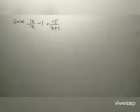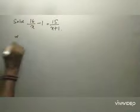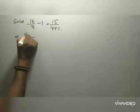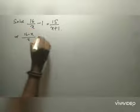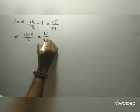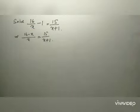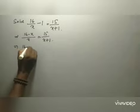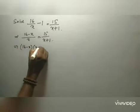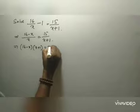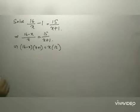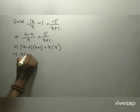Solve 16 by x minus 1 is equal to 15 by x plus 1, where x is the LCM. This gives 16 minus x is equal to 15 by x plus 1. By cross multiplication, 16 minus x into x plus 1 is equal to x into 15.